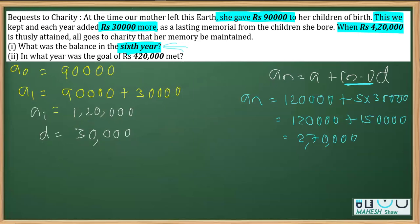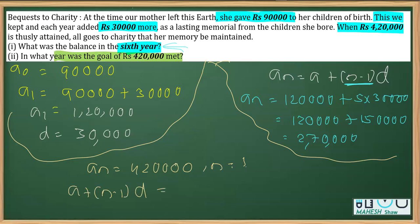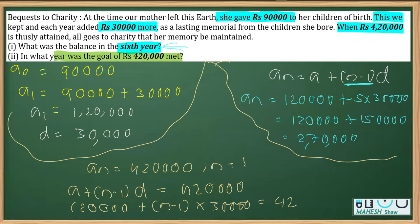For the next part, they are asking in which year the total goal of ₹4,20,000 is attained. Here aₙ is given and we have to find n. So we take aₙ = 4,20,000 and replace it using the formula: a + (n−1)d = 4,20,000. With a = 1,20,000 and d = 30,000, we write: 1,20,000 + (n−1) × 30,000 = 4,20,000.